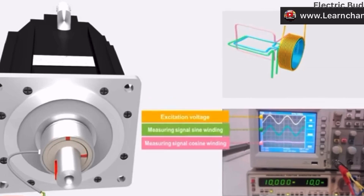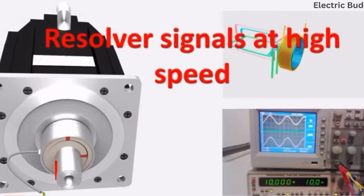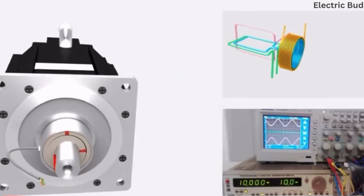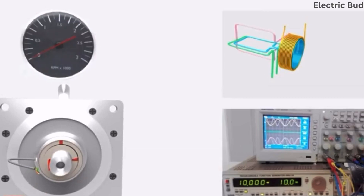Let's turn the motor shaft 90 degrees and we can prove all these statements. So let's change the time base of our oscilloscope and watch the measuring signals.